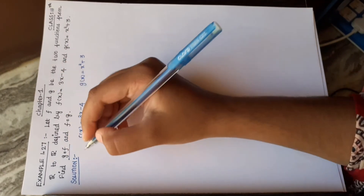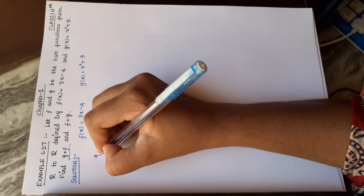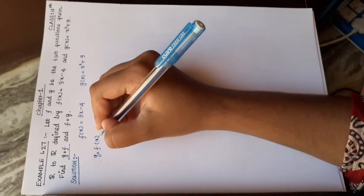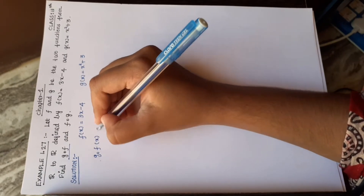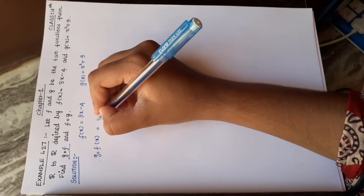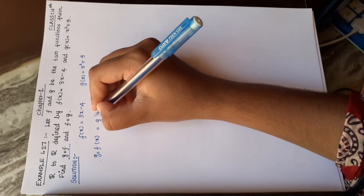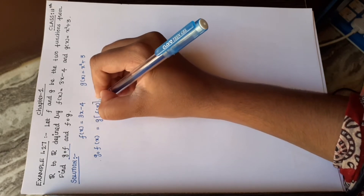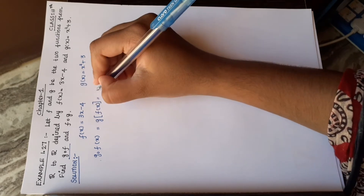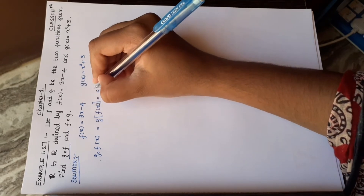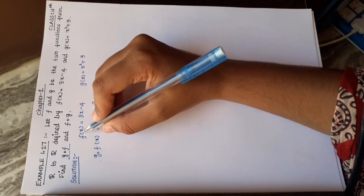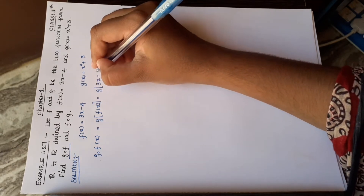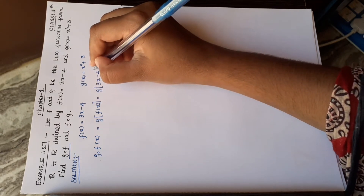First, find g of f. So g(f(x)) means we substitute f(x) = 3x - 4 into g. So g(f(x)) = g(3x - 4).